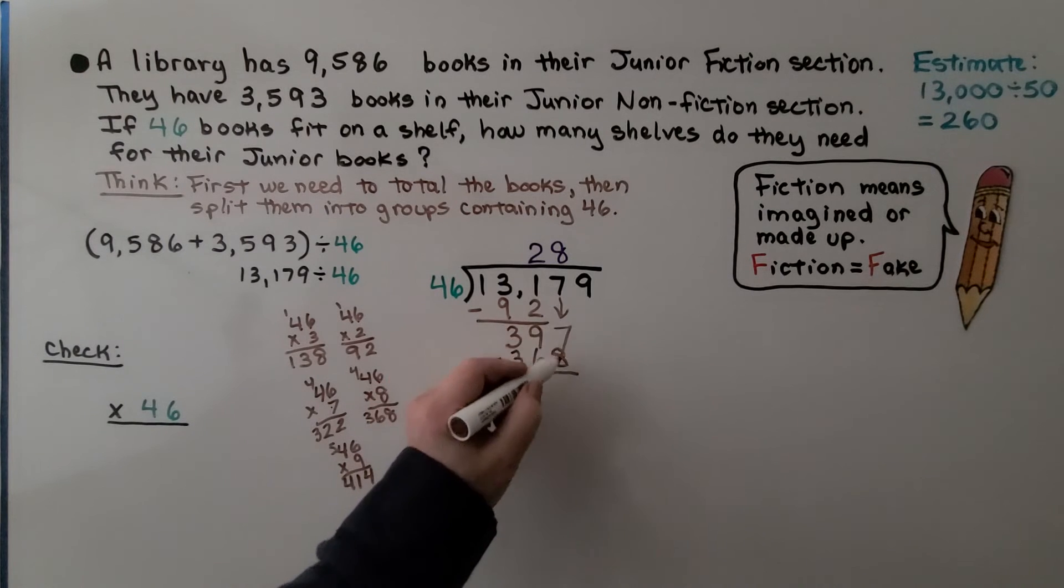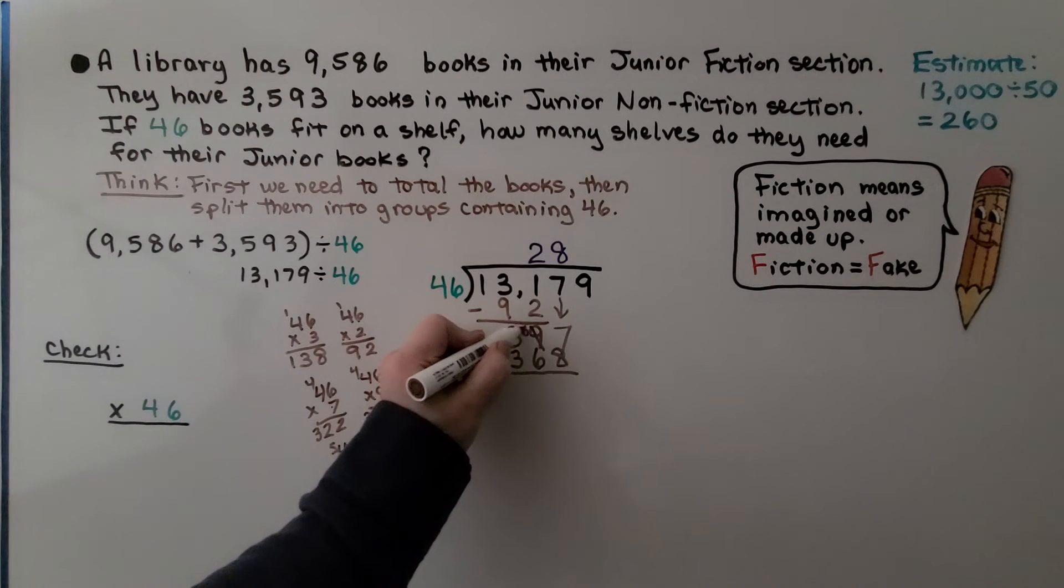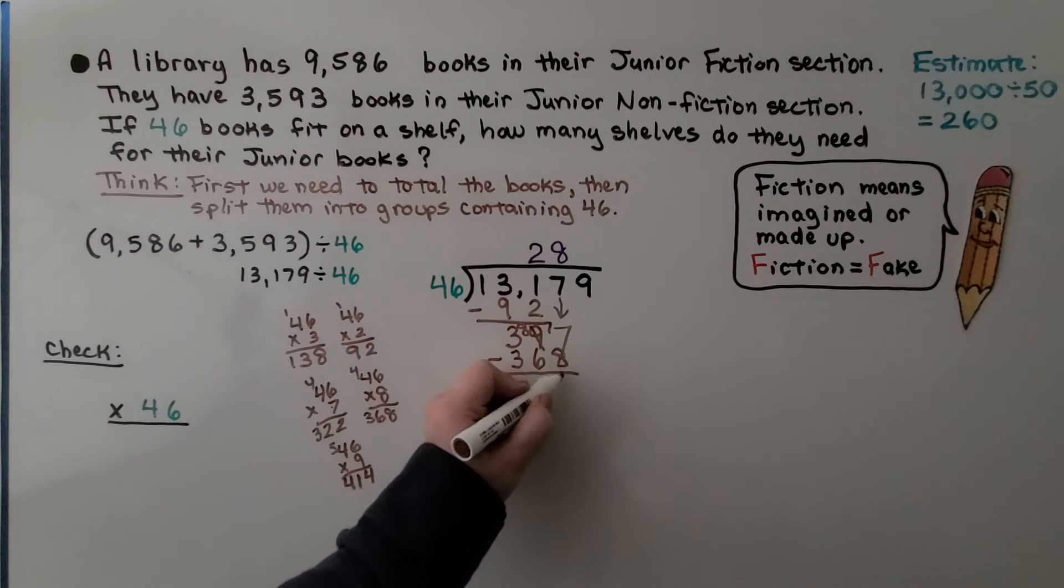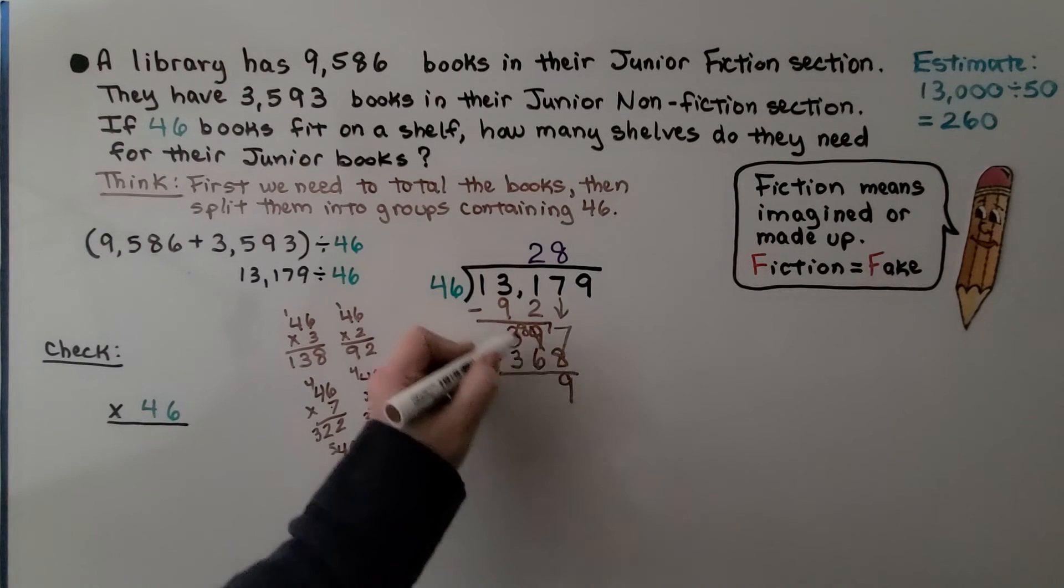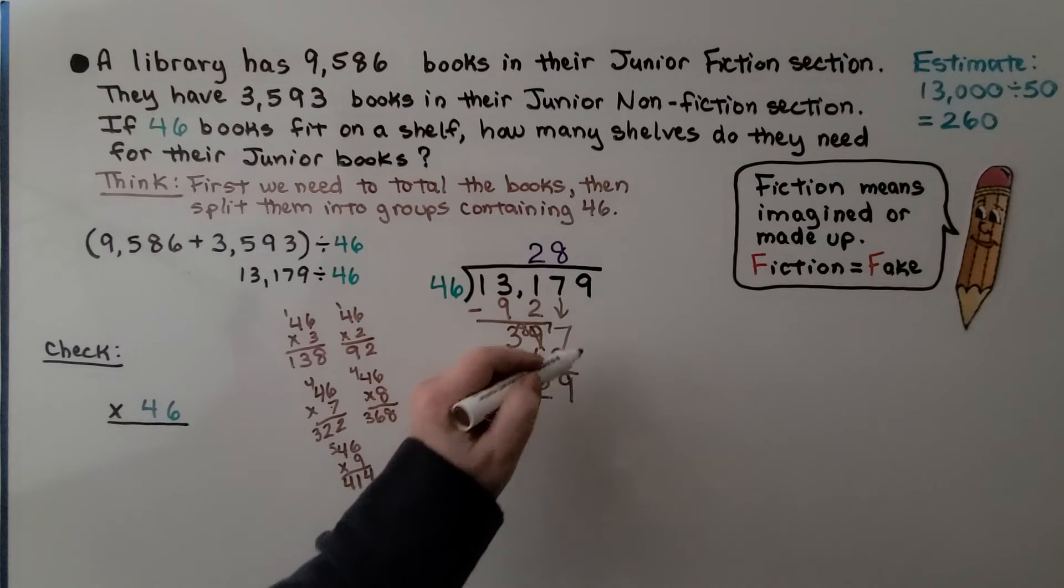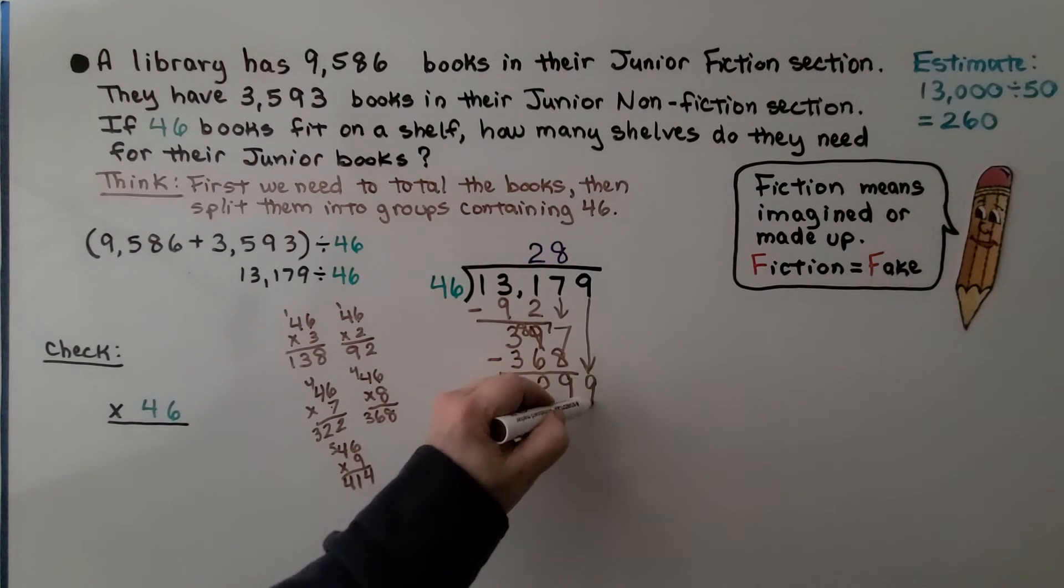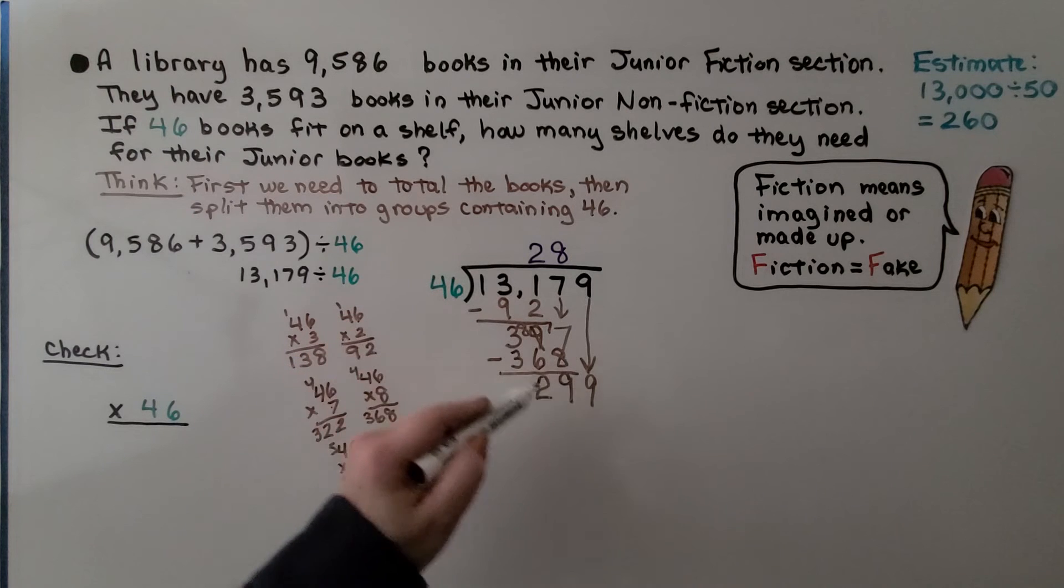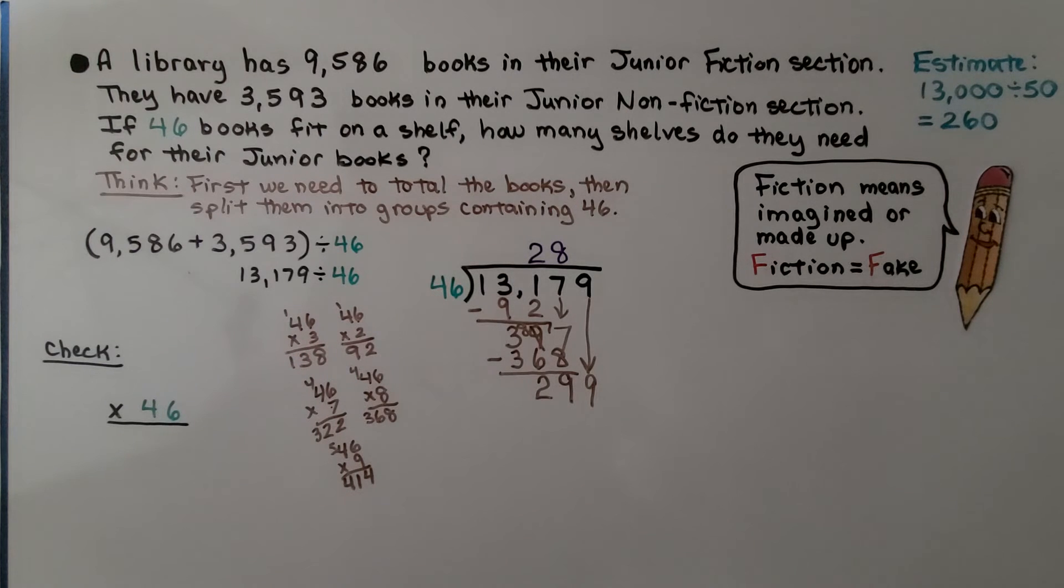We can't have 7 and take 8 away, so this is going to become an 8. That's going to become a 17. 17 minus 8 is 9. 8 minus 6 is 2. And now it's the 9's turn to come down. How many times can 46 fit into 299? Now, we've got some math that we did on the side. We can see 7 would be too much. That's 322.